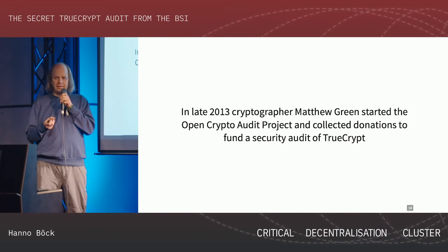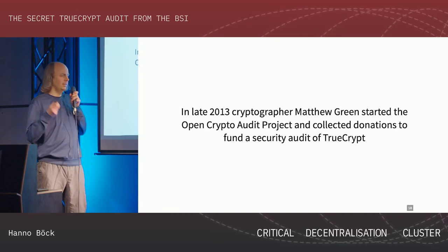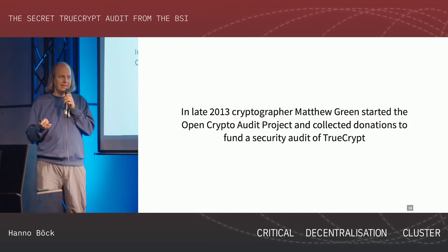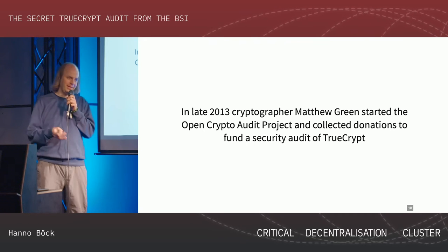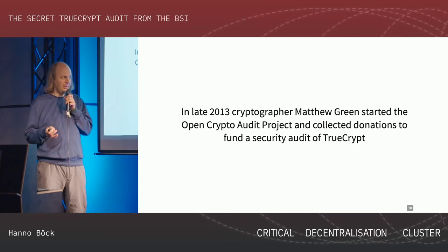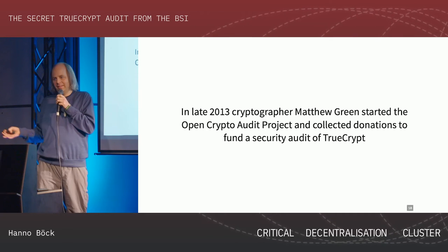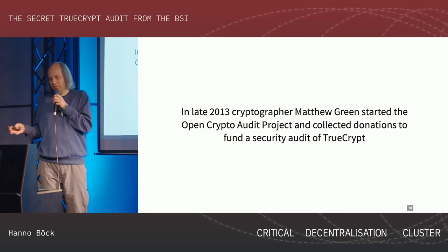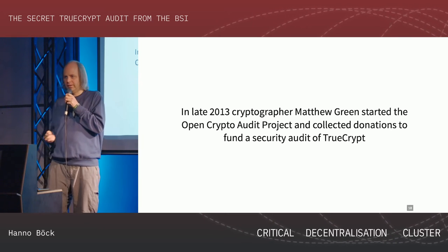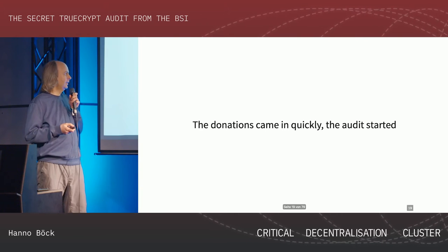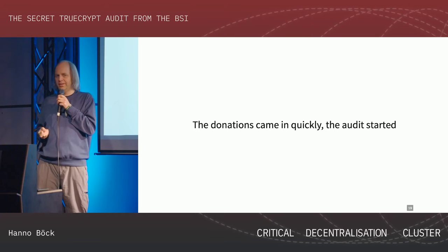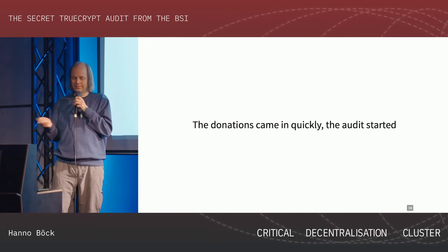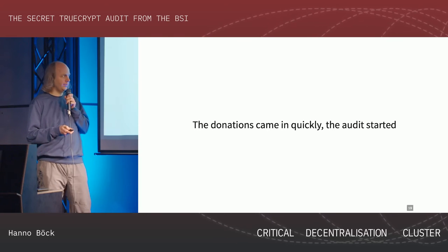In 2013, Matthew Green - a famous cryptographer - said we need to do something about this; he didn't know if he could recommend TrueCrypt as safe. He started collecting donations so they could start an audit, a security test of the TrueCrypt software. The donations came in quickly, they started hiring a company specialized in auditing cryptographic software, and the audit started.